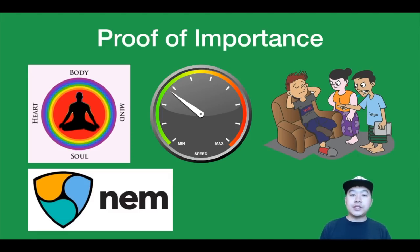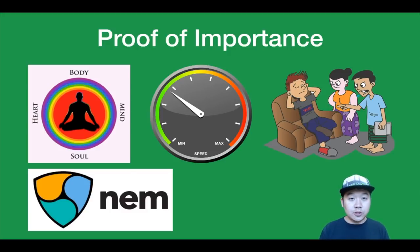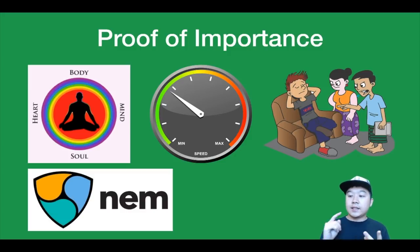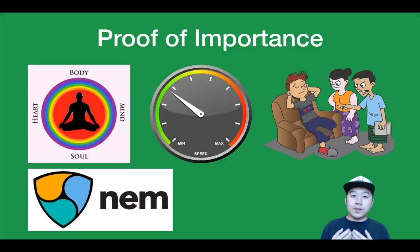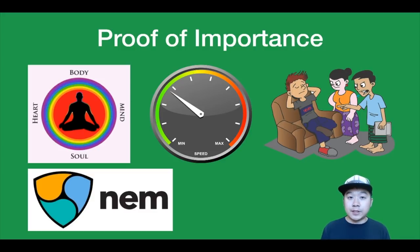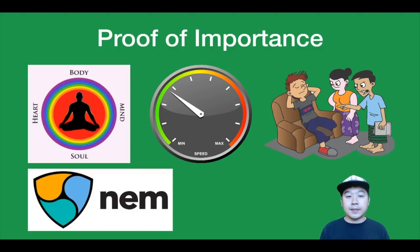Proof of importance is kind of an expanded version of proof of stake. Basically it says that not only the amount of coins you hold should be considered — there's a variety of other metrics that should be taken into account. For example, in an importance calculation, you can factor in notoriety, balance, velocity of transactions, and more. This is a way to punish block producers who just hold a lot of coins and sit back, staking without contributing to ecosystem activity. Many implementations require a minimum balance to participate. NEM is a big-name project that utilizes this approach, and it's also similar to proof of believability, which is IOST's consensus mechanism.